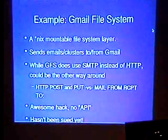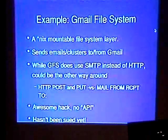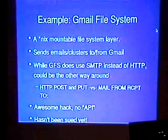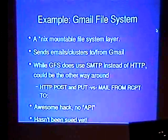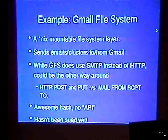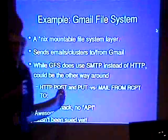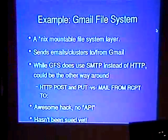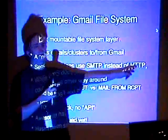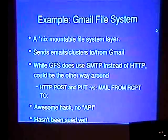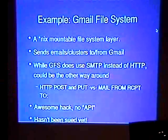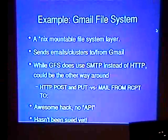Here's a great example of a non-sanctioned extension: did you all hear about the Gmail file system? It runs on top of Gmail — it's an actual mountable file system, which is really cool because you can do reads and writes. It sends emails slash clusters slash attachments to and from Gmail. Technically it's using SMTP instead of HTTP, but you access Gmail using HTTP. The same way you'd compose an email, you'd be using HTTP POST or PUT versus a MAIL FROM and RCPT TO. It's a different protocol but they're so similar. It's an awesome hack — the guy had no API at all and he hasn't been sued yet.